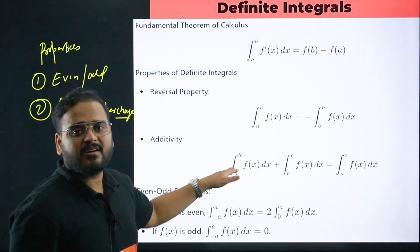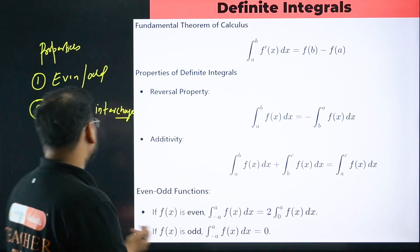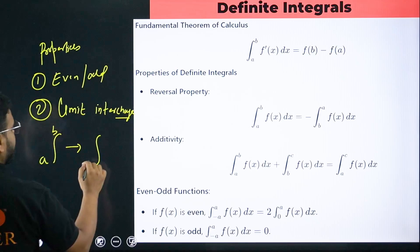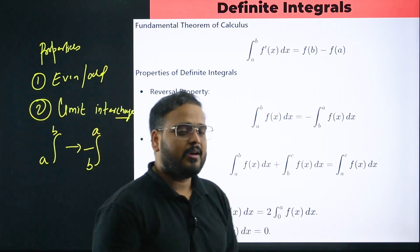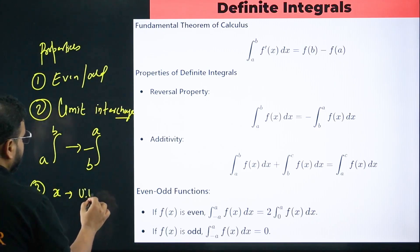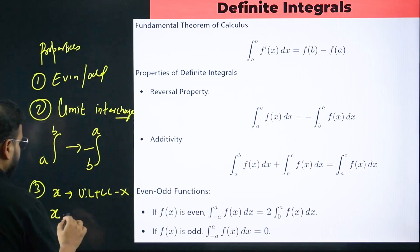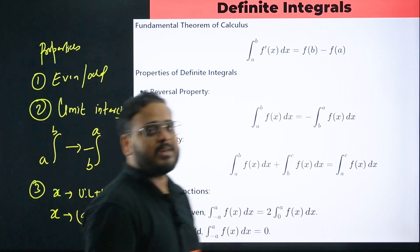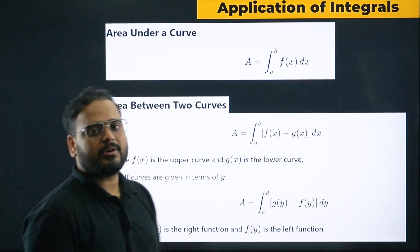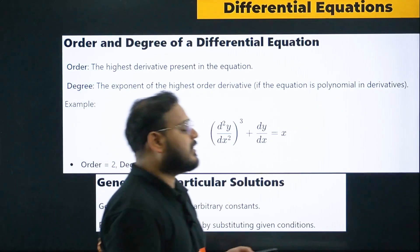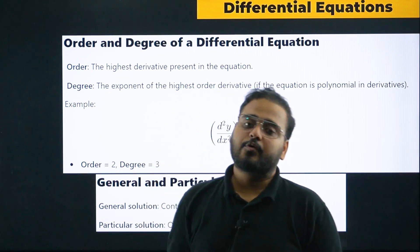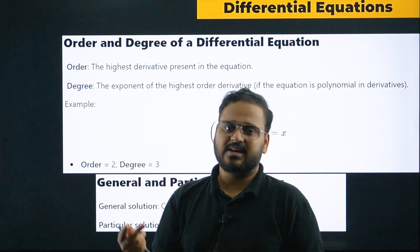For definite integral properties: the limit interchange property — if you have ∫a to b, you can write it as −∫b to a. The even-odd function property is also key. Another property: replacing x by (a + b − x), known as the King's method — these properties are highly important for solving questions. For the area under the curve (AOI), remember standard formulas for ellipse, parabola, line, and circle — like πab, πa, πa².